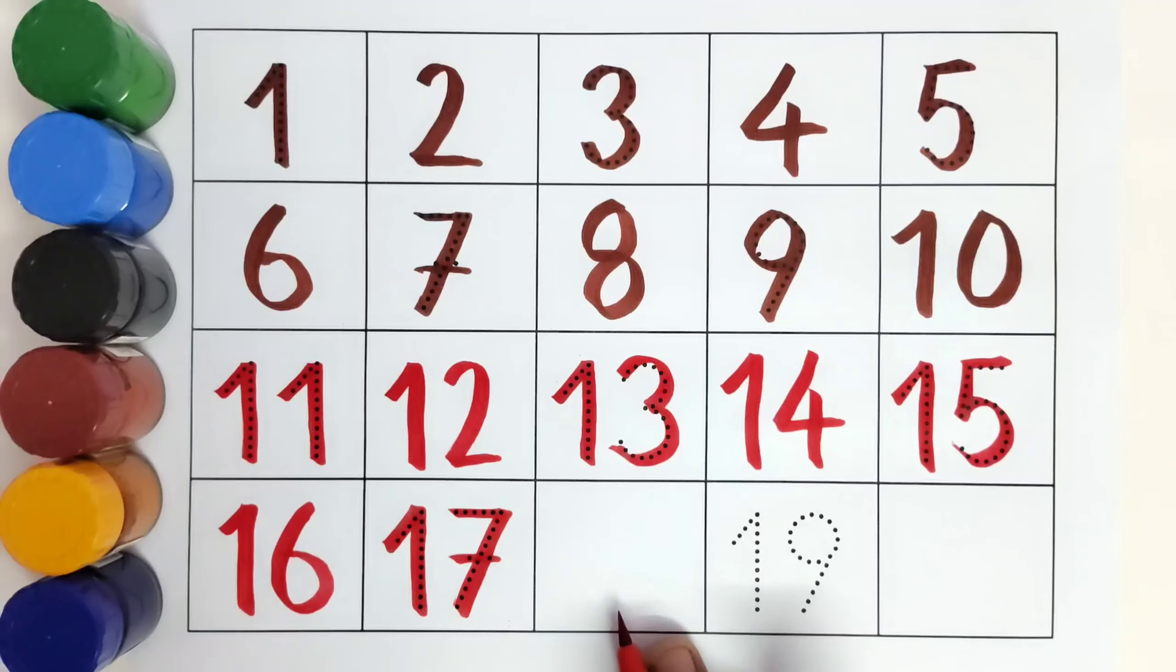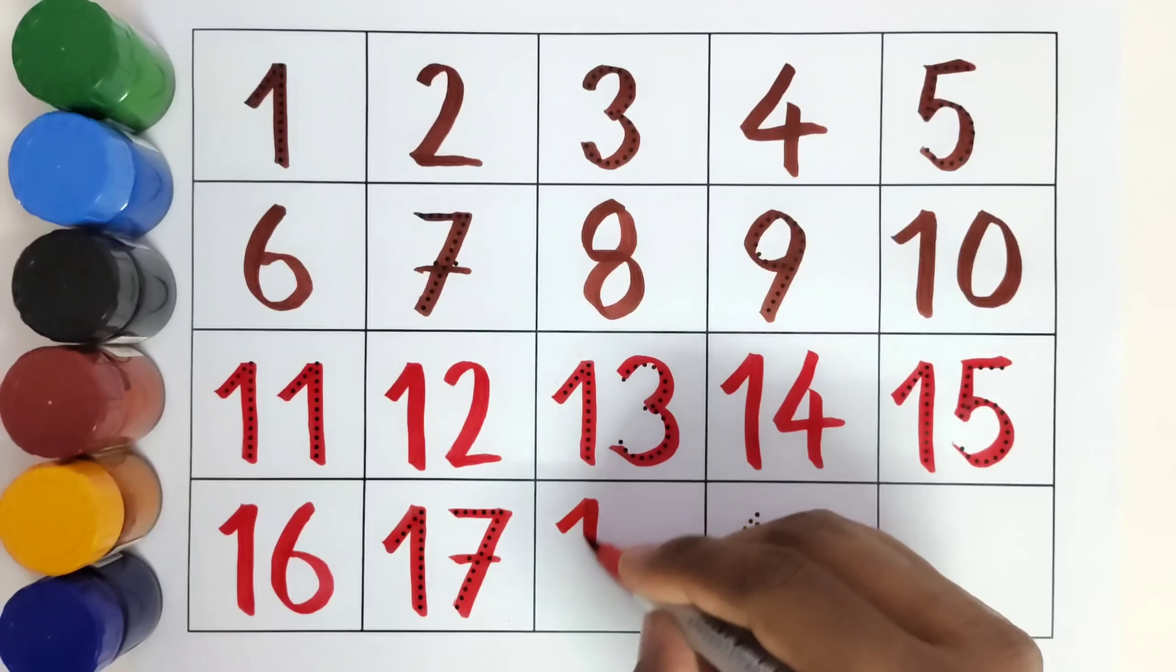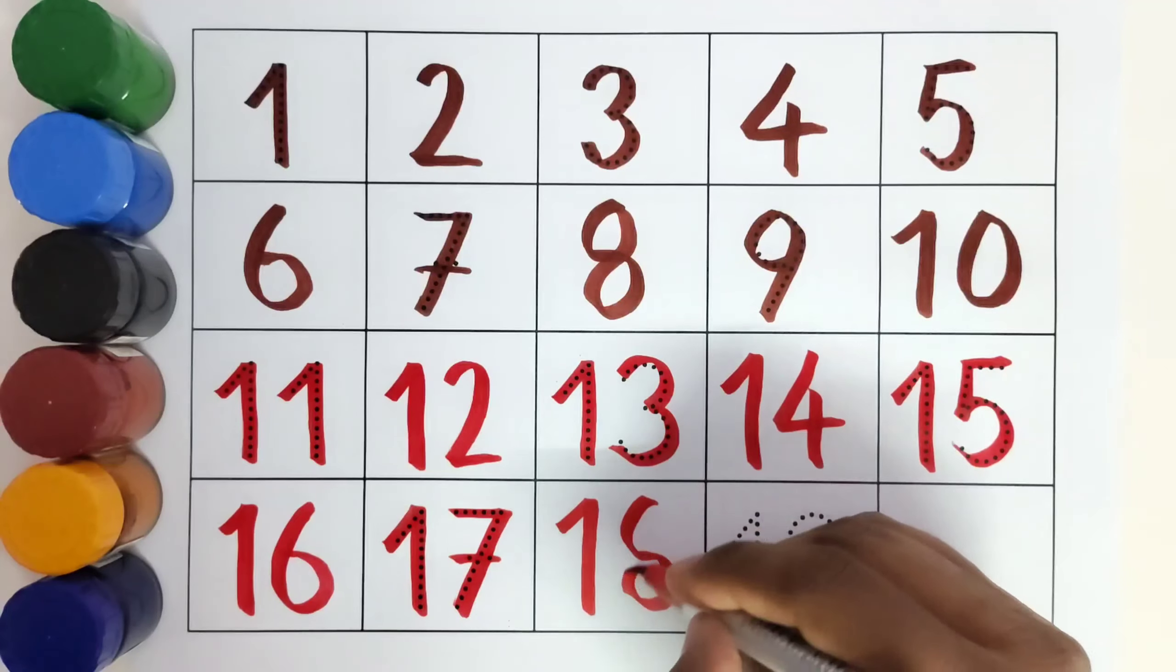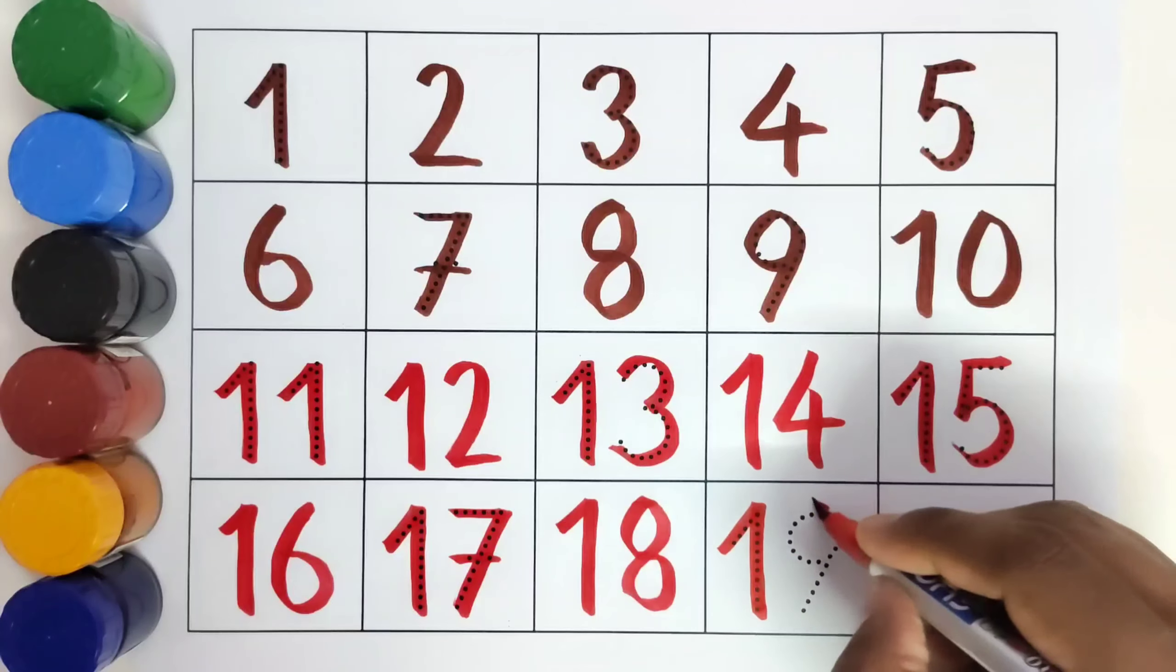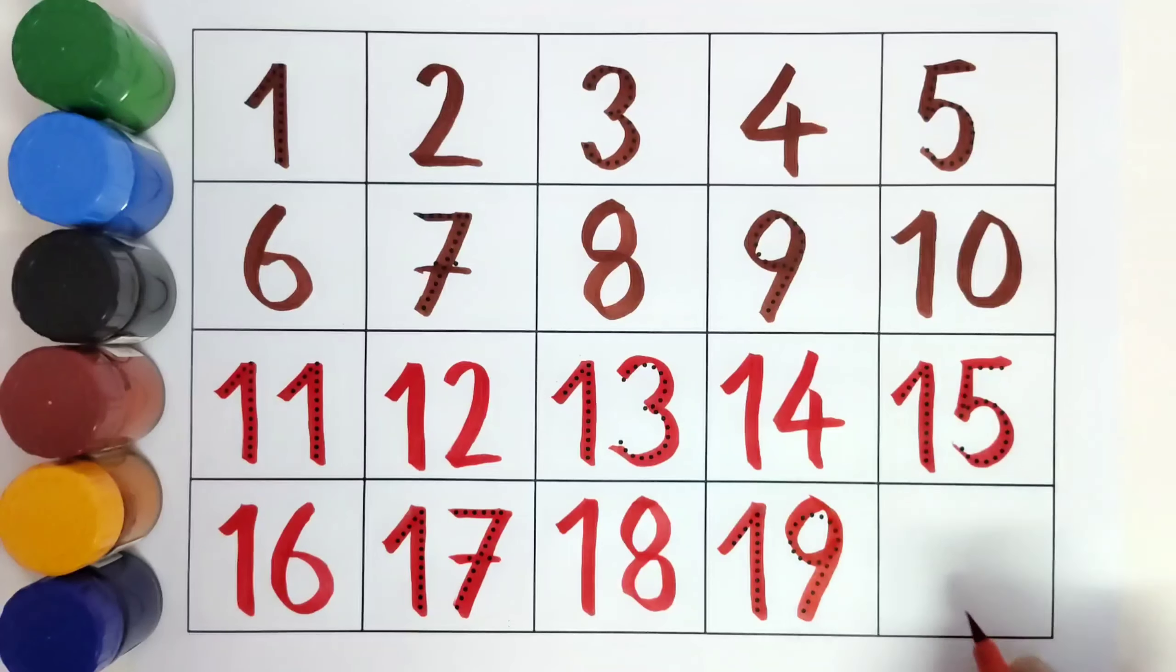What comes after seventeen? Eighteen. This is nineteen. What comes after nineteen? Twenty.